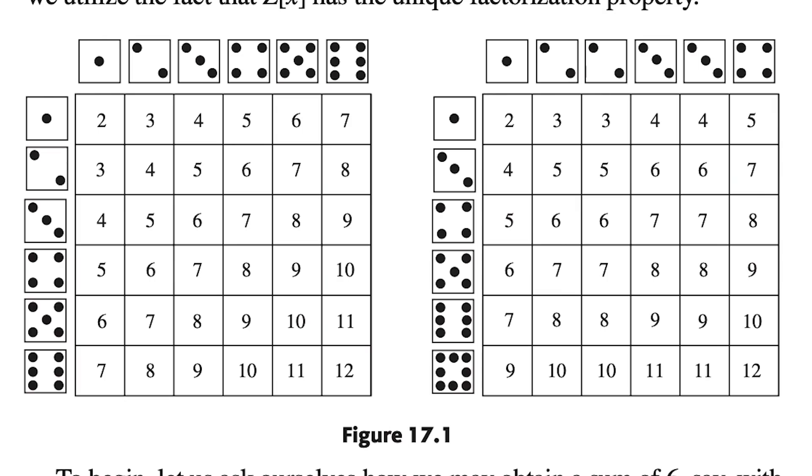These are known as Sicherman dice, and are the only pair of six-sided dice with that same probability distribution.